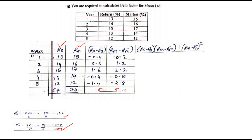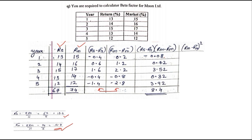Next we find the product column (RS−RS̄)×(RM−RM̄): −0.4×0.2=−0.08, 0.6×1.2=0.72, 1.6×2.2=3.52, −0.4×(−0.8)=0.32, −1.4×(−2.8)=3.92. Adding all positives: 0.72+3.52+0.32+3.92=8.48, then subtracting 0.08 gives a total of 8.4.